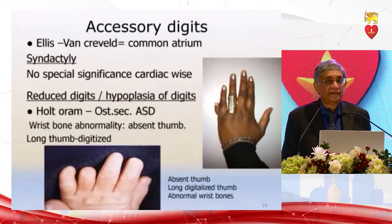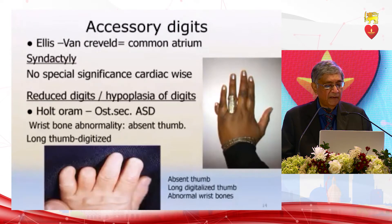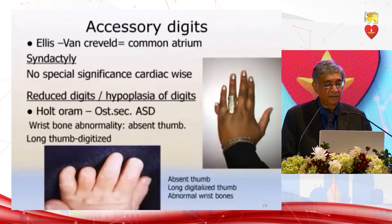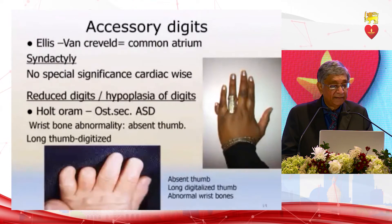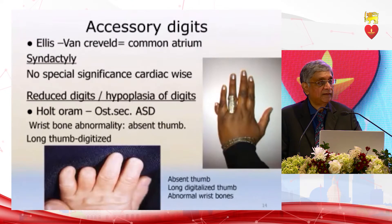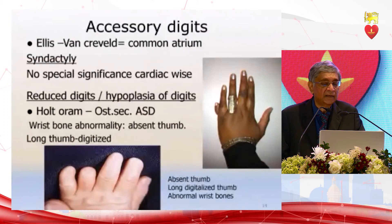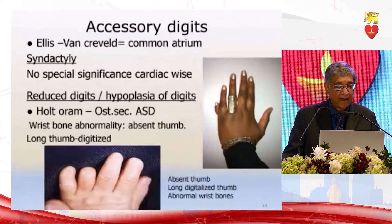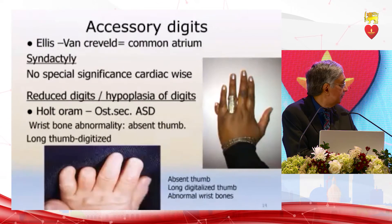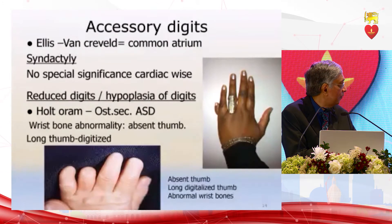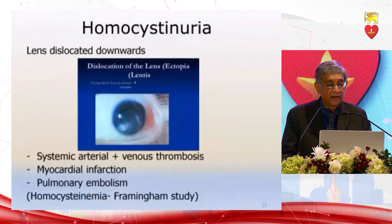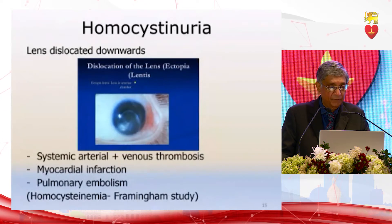Look at the hands: accessory digits indicate Ellis-van Creveld syndrome, which is associated with common atrium. There is syndactyly where the digits are fused together. Reduced digits and hypoplasia of the digits are seen in adults in ostium secundum ASD — the Holt-Oram syndrome — with wrist bone abnormalities and sometimes deformed or shortened thumbs. This indicates underlying atrial septal defect or common atrium, which is important.